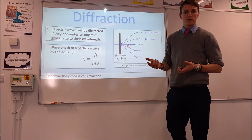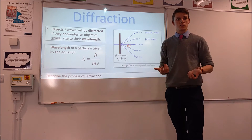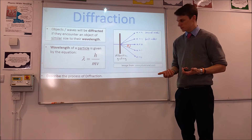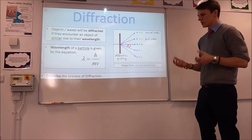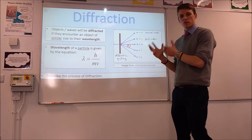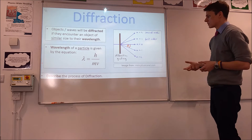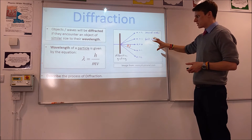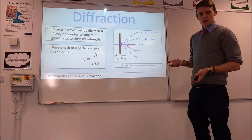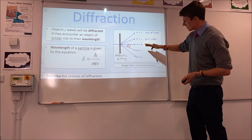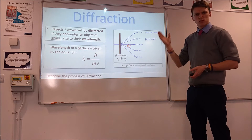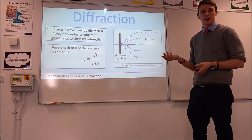For most particles, this is a very, very small number, which is why you don't see diffraction happening very much, because they don't encounter objects the right size. However, with electrons, their wavelength is sufficiently large that you can see these diffraction characteristics. You'd have seen with interference what a diffraction grating pattern looks like — you essentially get the central maximum and then maxima as you go further out, so you get a bright and dark fringes pattern.